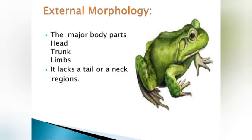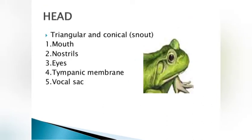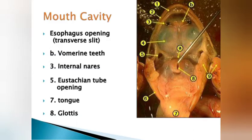External morphology contains head, trunk, and limbs. There is no tail or neck region — that is the external morphology common to all types of frogs. The head is triangular and conical in shape, and contains snout, mouth, nostrils, eyes, tympanic membrane, and vocal sacs.